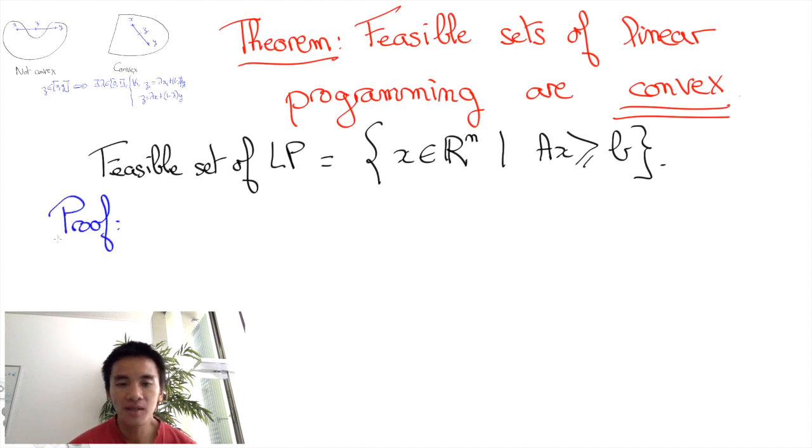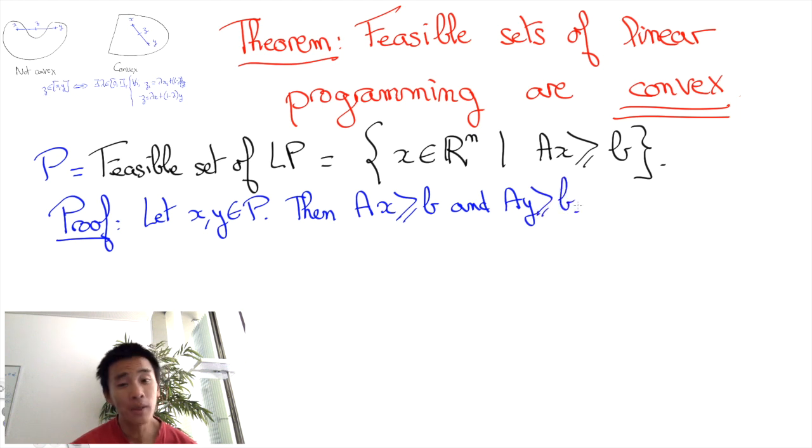We can now give the proof. Consider a feasible set P of a linear program and assume X and Y belong to P. Then we know by definition that AX is greater or equal to B and AY is greater or equal to B. Now let's consider any point Z equals lambda X plus (1 minus lambda) Y in between X and Y.